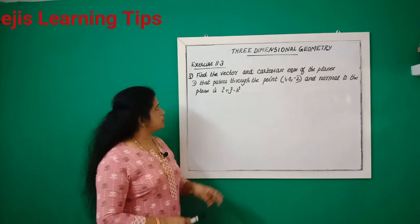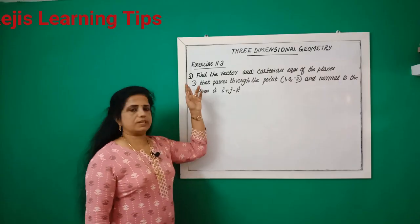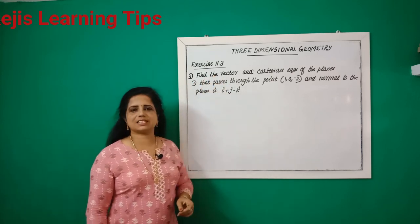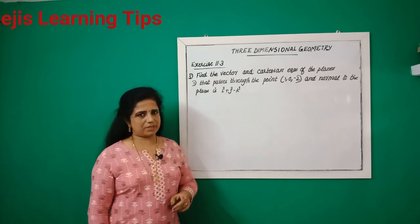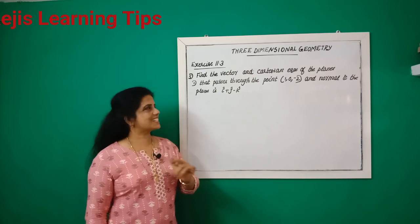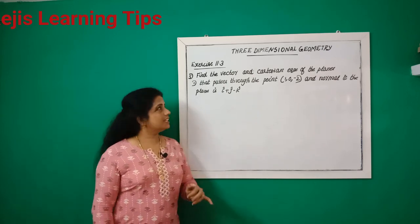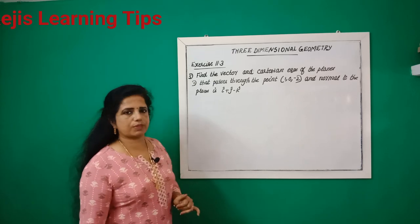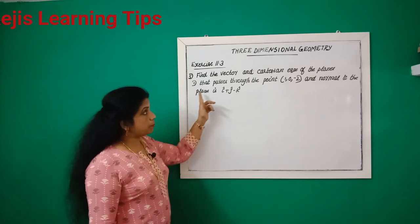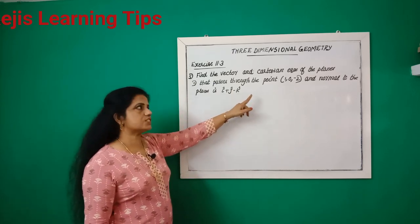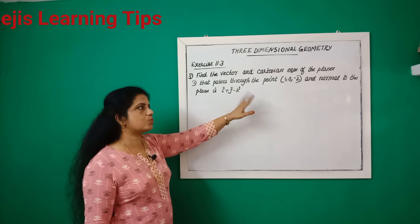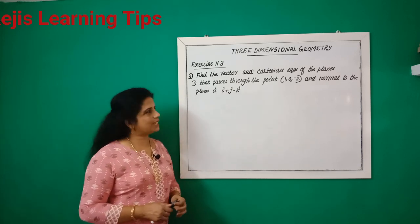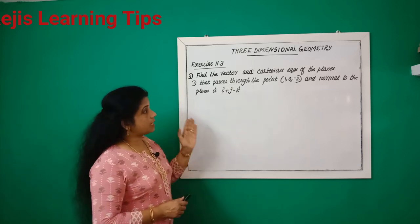Hi everyone, welcome back. Today we are going to discuss the fifth question from Exercise 11.3 of three-dimensional geometry. The fifth question: find the vector and Cartesian equation of the plane that passes through the point (1, 0, -2) and is normal to the plane i plus j minus k.